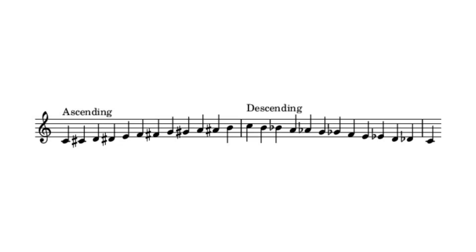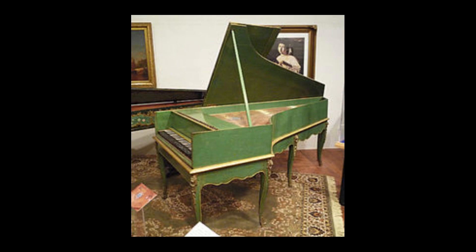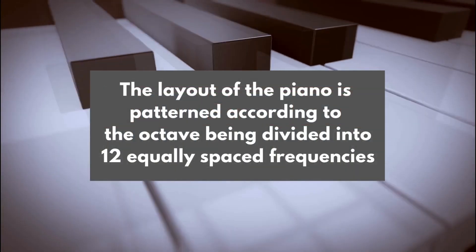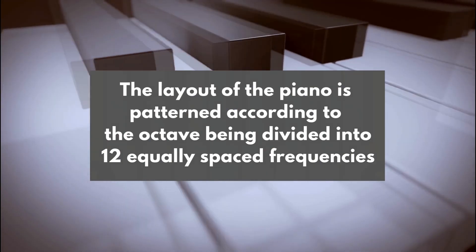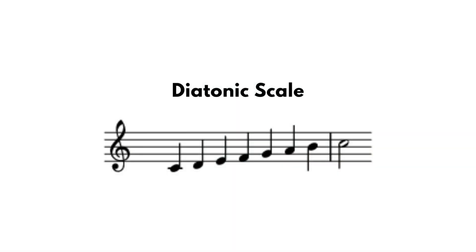Basically, the frequencies between an octave have been divided into 12 equal intervals. These 12 intervals have been equally tempered, or equally spaced. We know these intervals as half steps, also known as semitones. So however the keyboard evolved to appear as it does, we can say that the reason it looks this way is because of the wide acceptance of an octave being divided into 12 equally spaced frequencies. And these 12 piano keys between two octaves also reflected the widely accepted diatonic scale.